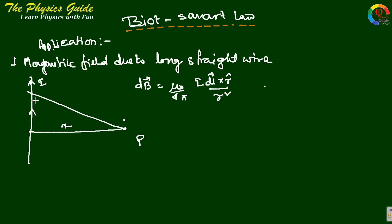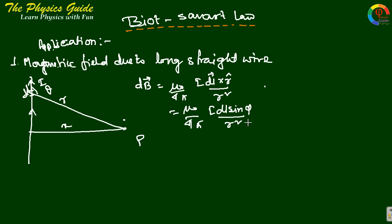Let X be the perpendicular distance, let this be the current element dL, and let R be the distance from the element to the point. If the angle between the current element and R is θ, then dL cross R gives dB equals mu₀ by 4π times I dL sinφ by R squared. Drawing a parallel, this angle is also θ, so φ equals 90 plus θ.